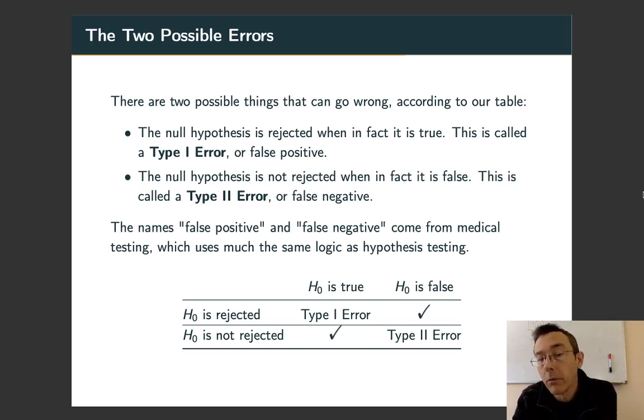The second thing is a type 2 error or a false negative. That's when the null hypothesis is not rejected when in fact it is false. So there is something going on and we just didn't pick it up with our test.